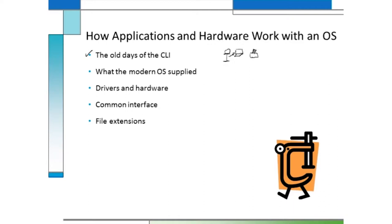Basically you're interacting with the operating system that is in control of the functions of what the computer does. Part of that control means that it's operating and working with different peripherals — that's what we call different hardware devices that we attach to a computer. It could be like a printer, a mouse that we connect, or keyboards.